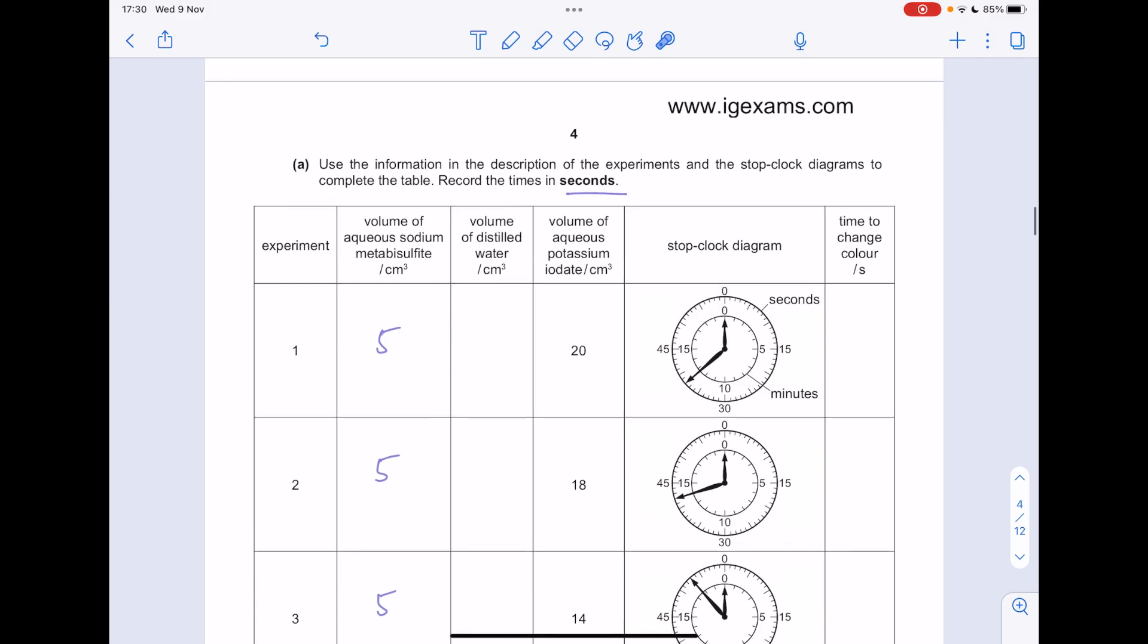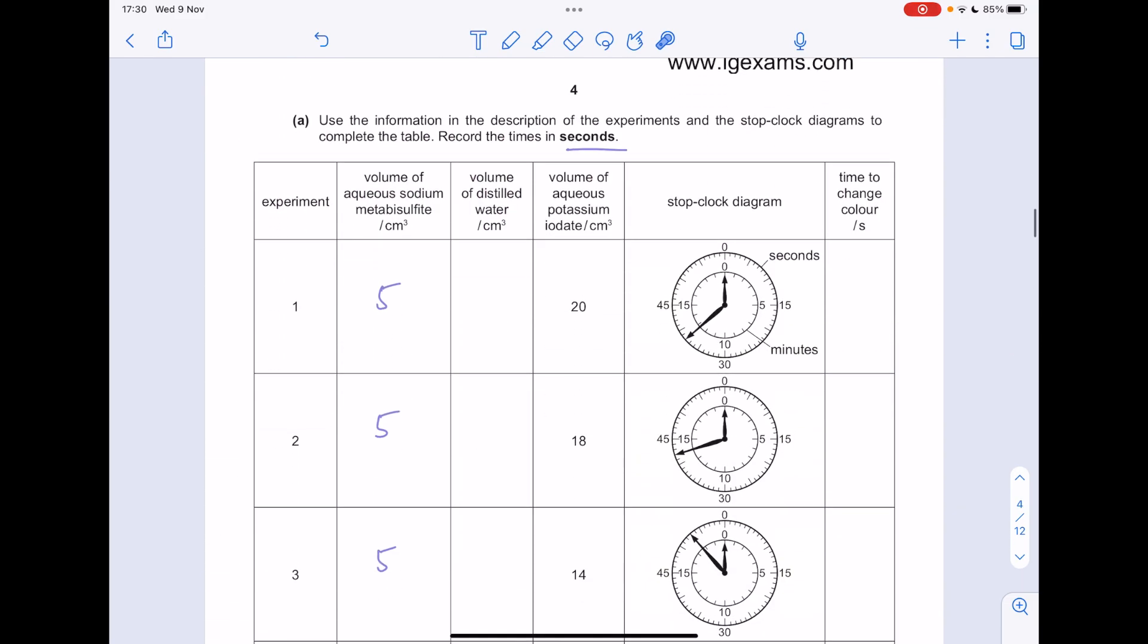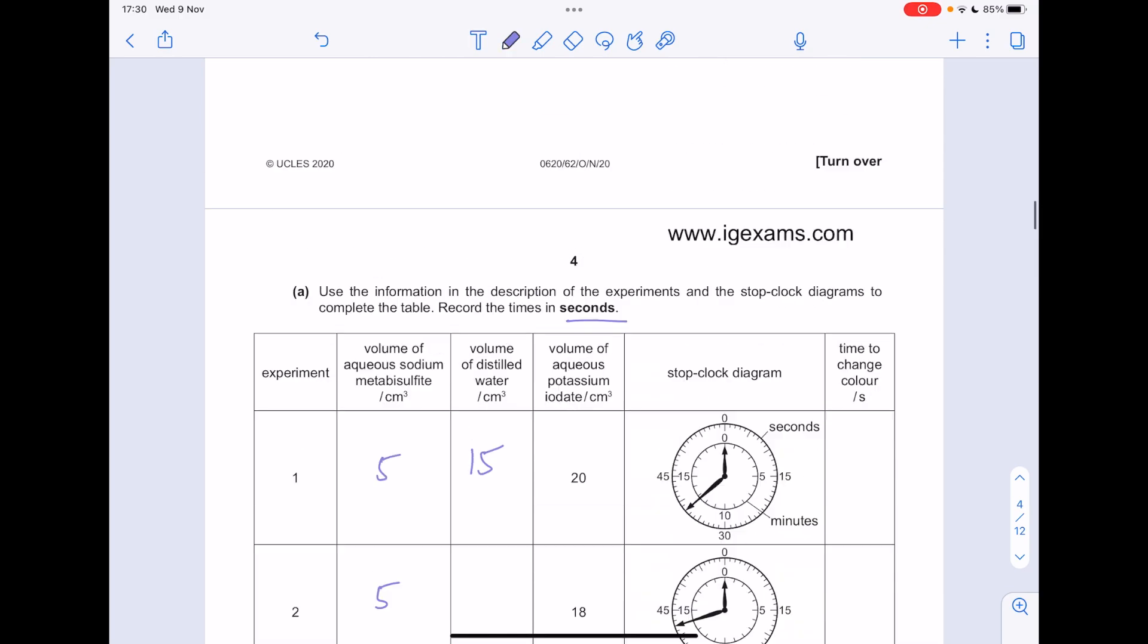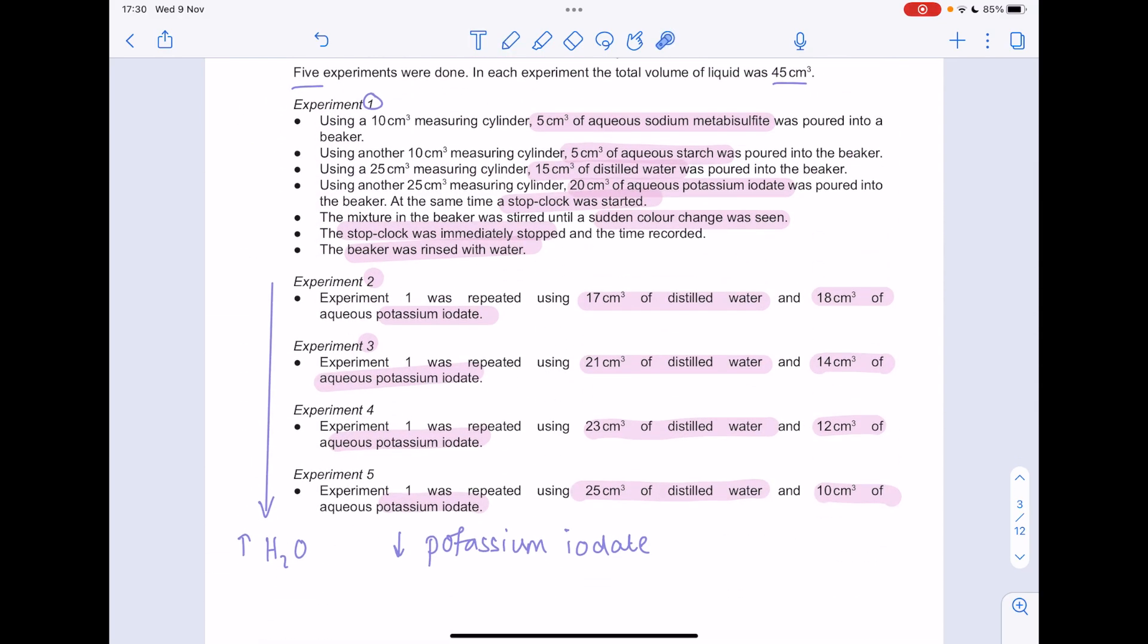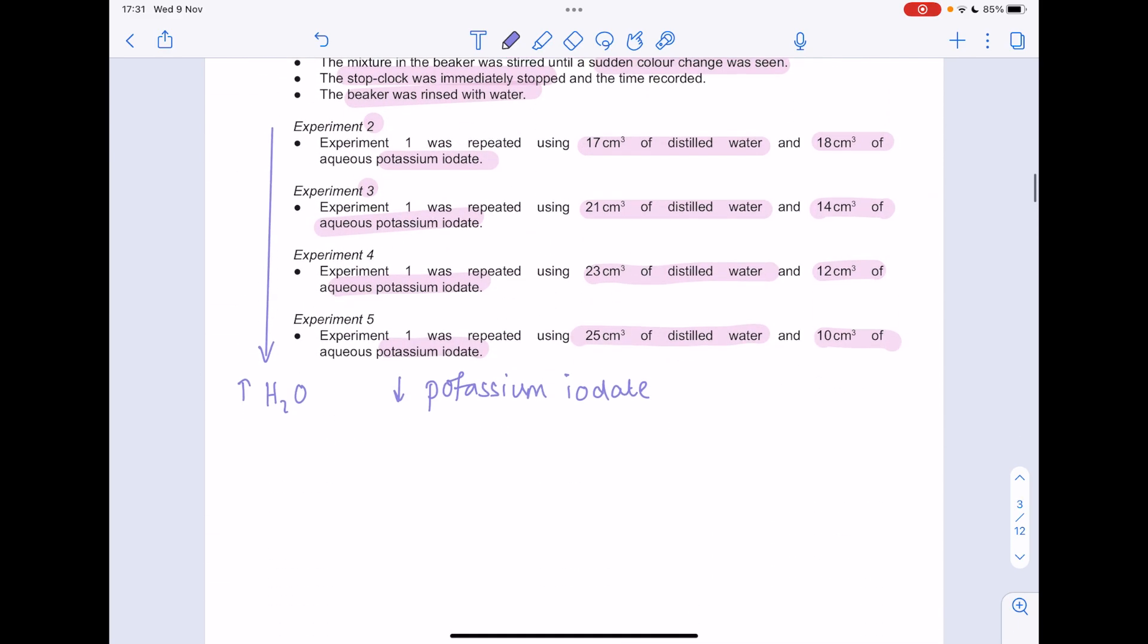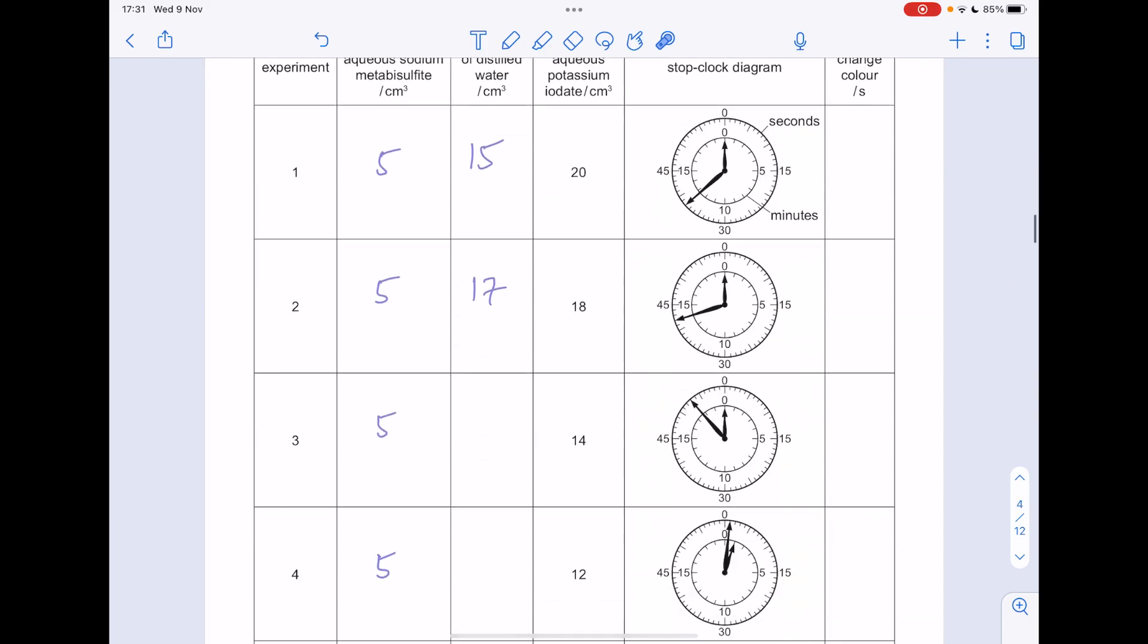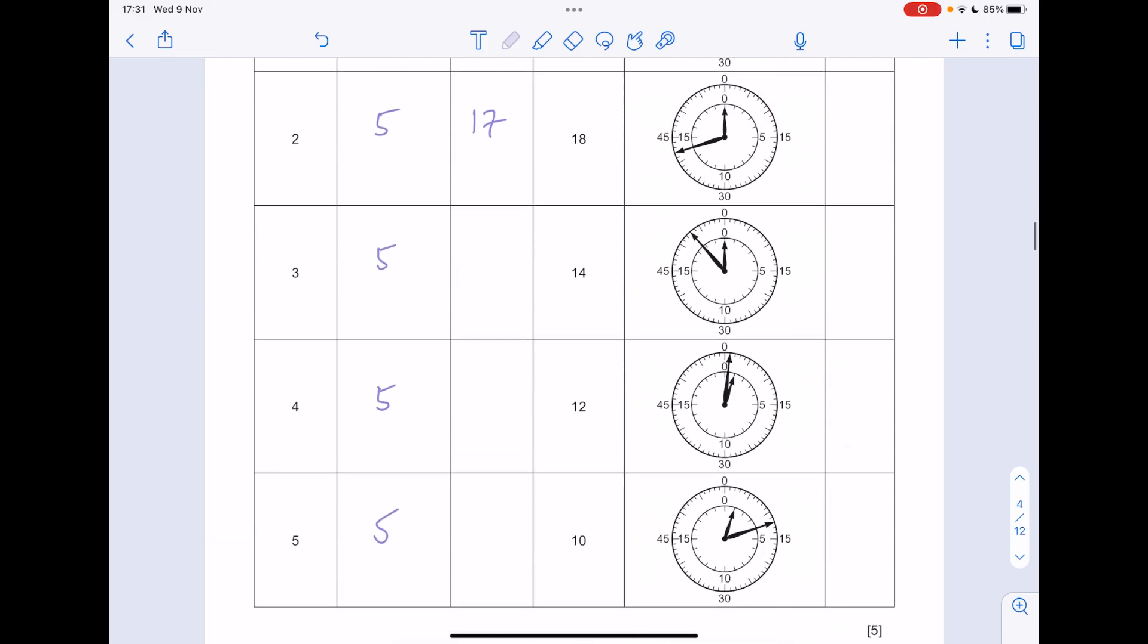What about the volume of distilled water? In experiment one, we were told it was 15. So there's the 15. What about experiment two? This time it was 17. Experiment three, 21. Experiment four, 23. Experiment five, 25. Keep cross-checking this.